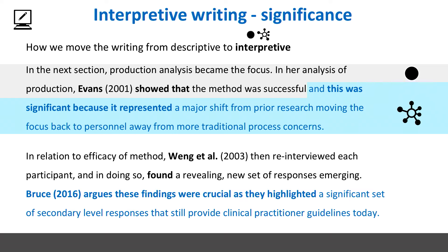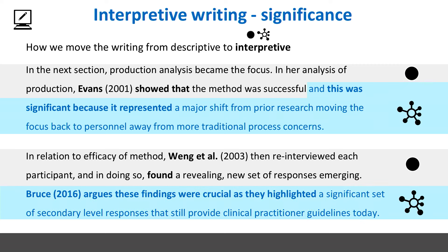Let's look at another example. Take 30 seconds to read this again. You'll see a similar thing going on. We have a descriptive element — Wang et al found something — and then an interpretive element, where Bruce argues why these findings were crucial, why they were important. So when we're using this language — 'this was significant,' 'this was crucial' — we're flipping the writing, moving it from descriptive to interpretation, the critical component.